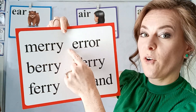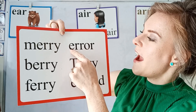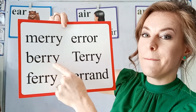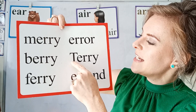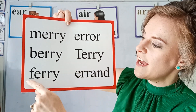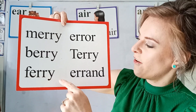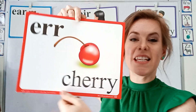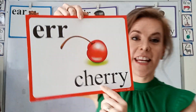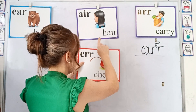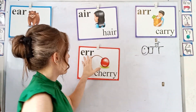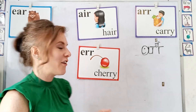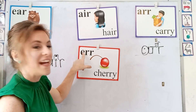So we have Mary, error, berry, Terry, fairy, cherry, and errand. This is the E-R-R in cherry. And you can remember that because you want to eat a cherry, and it starts with an E. The special sound starts with an E.